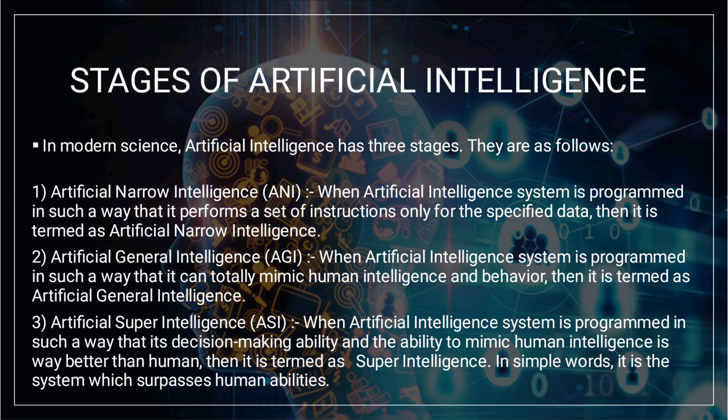Second, Artificial General Intelligence, AGI — when an AI system is programmed in such a way that it can totally mimic human intelligence and behavior, it is termed Artificial General Intelligence. Third, Artificial Super Intelligence, ASI — when an AI system is programmed such that its decision-making ability and ability to mimic human intelligence is way better than humans, it is termed super intelligence.